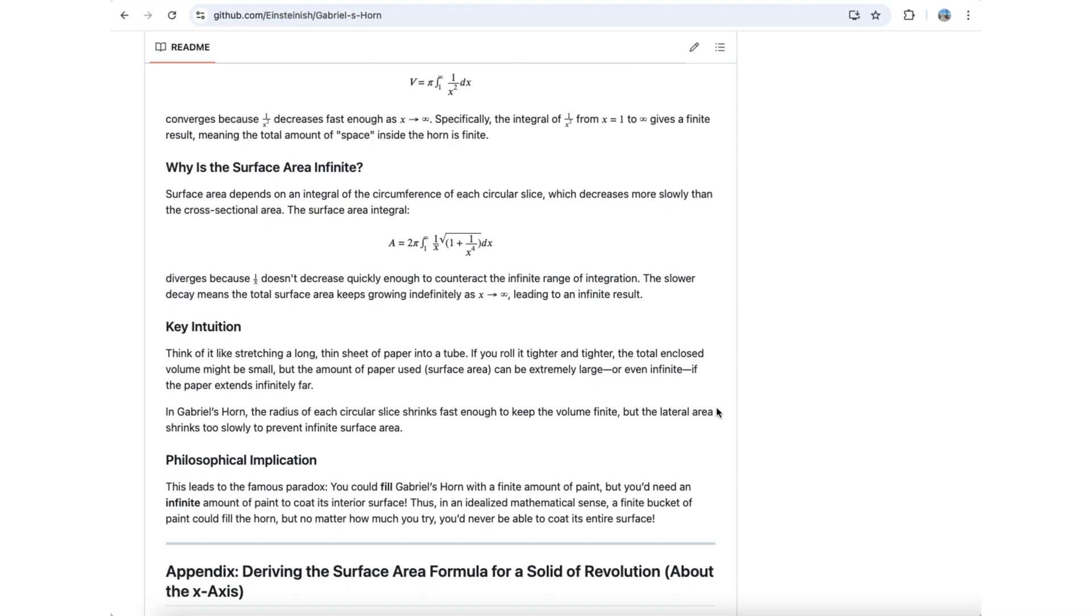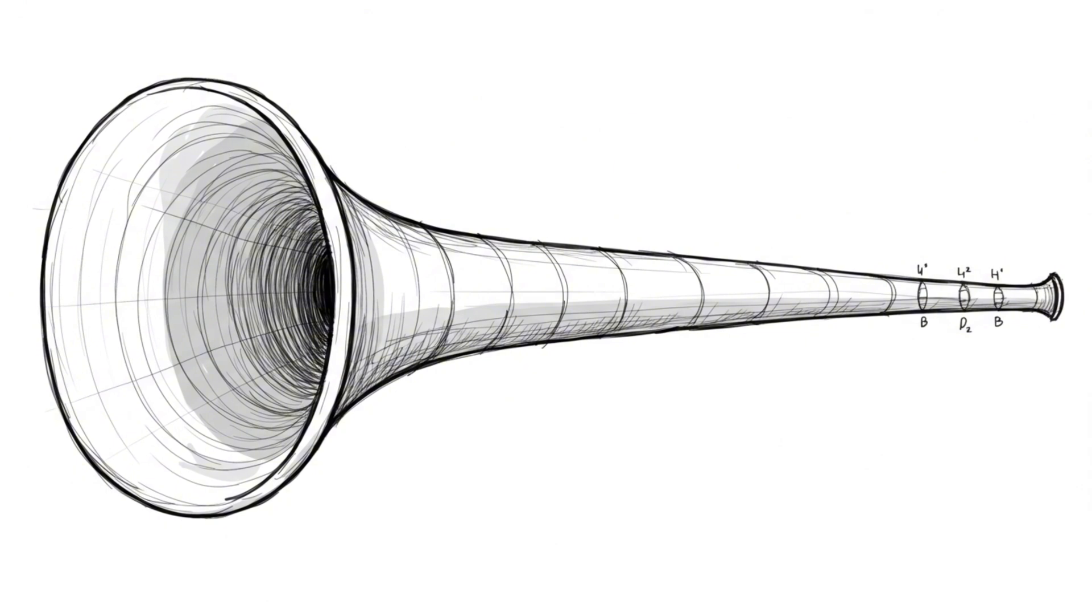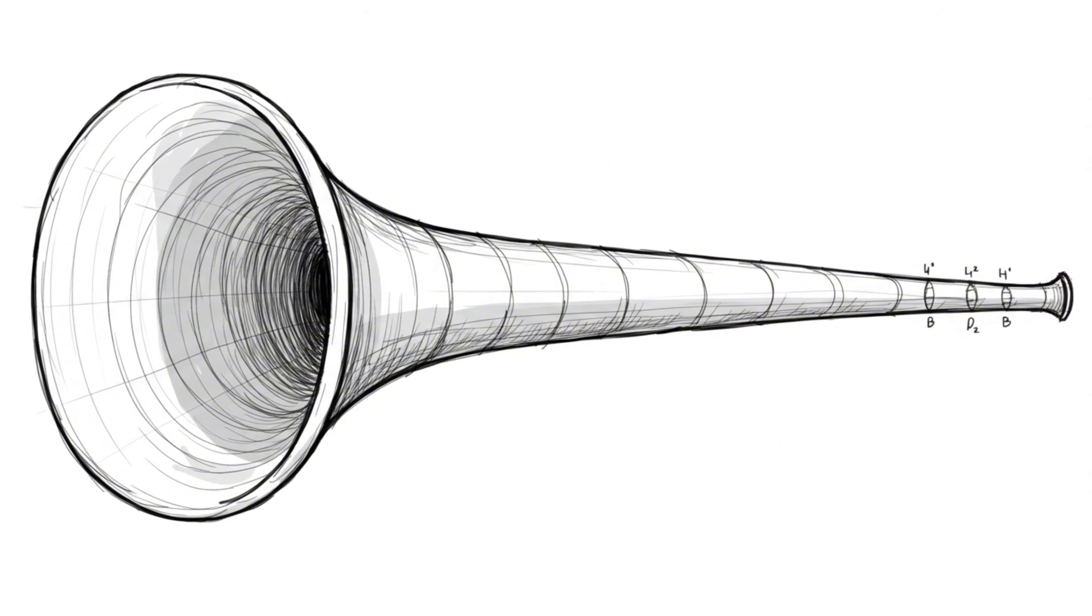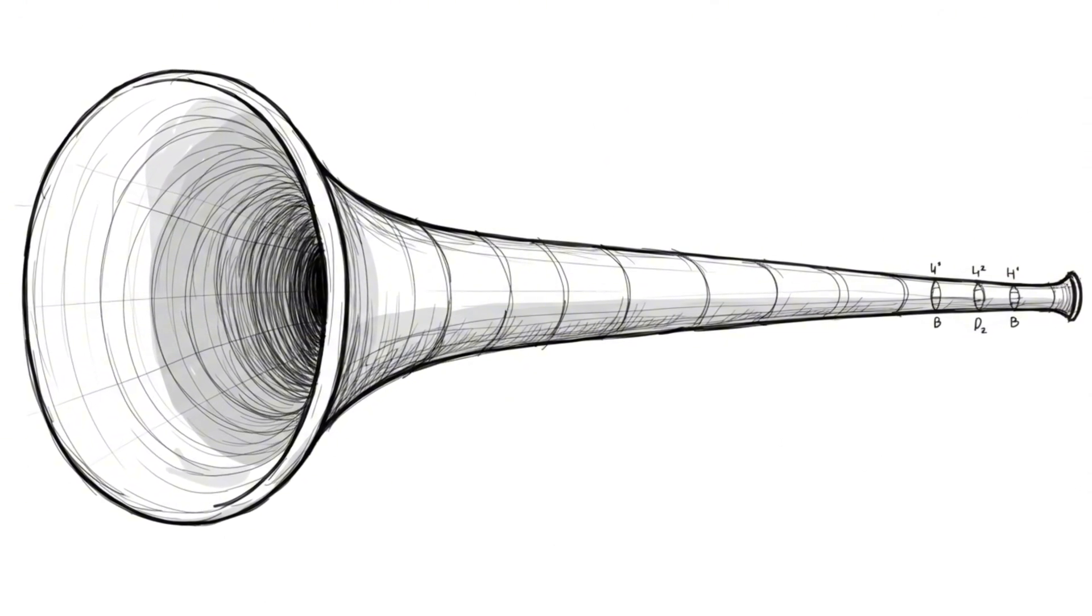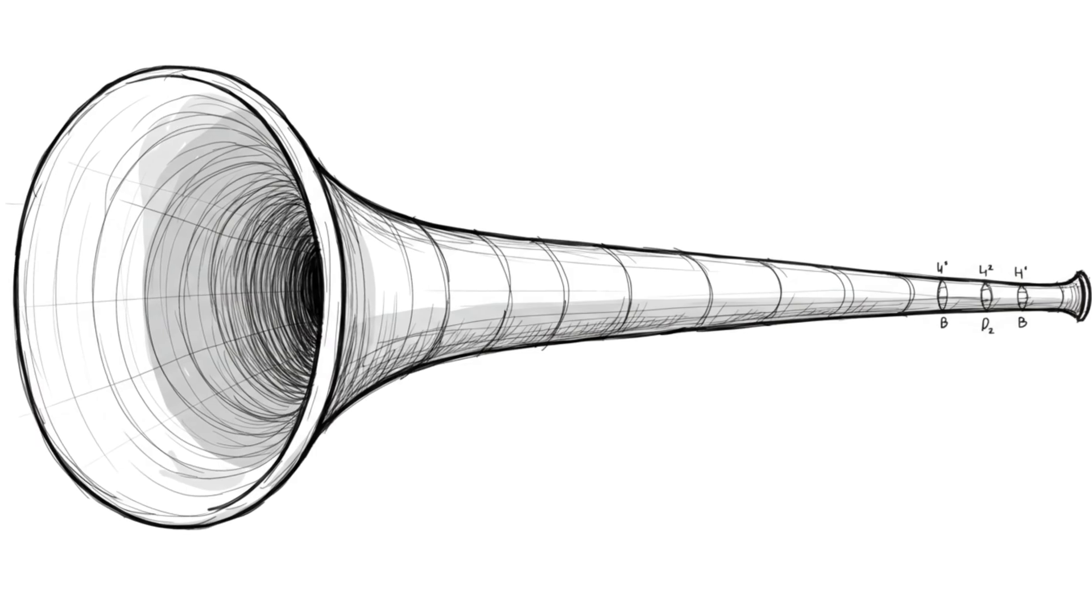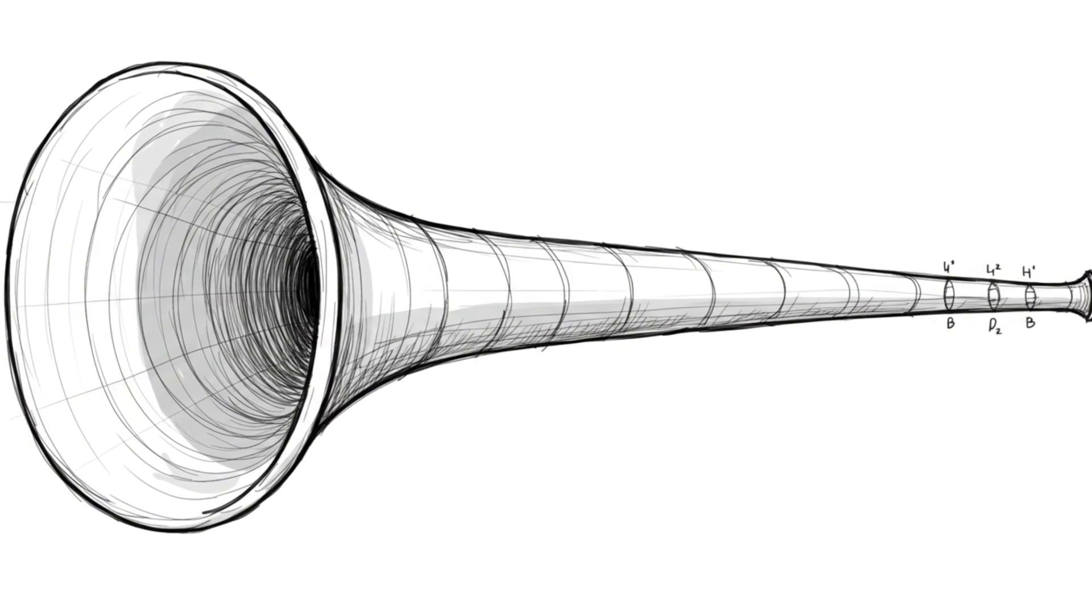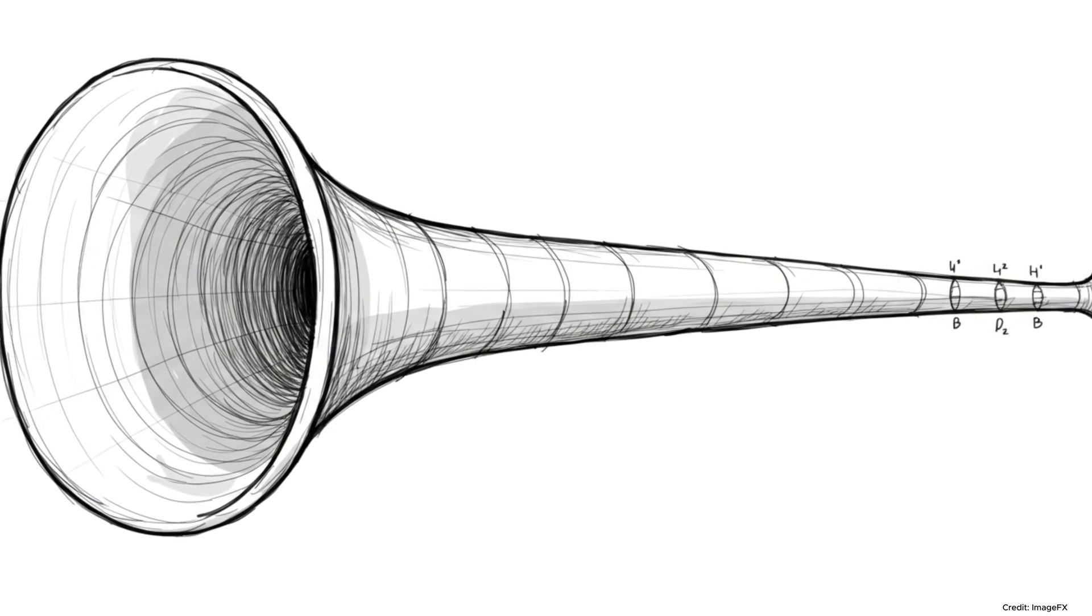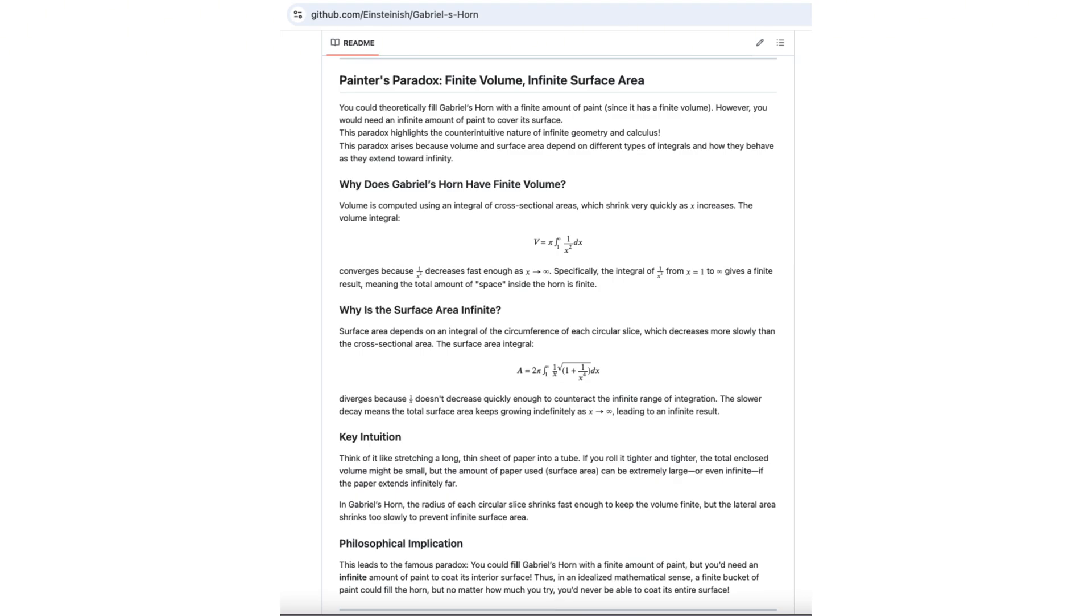In the real world, we expect volume and surface area to be proportional. If something has a large volume, it usually has a large surface area as well. This is why the idea of infinite surface area enclosing finite space feels so counterintuitive.